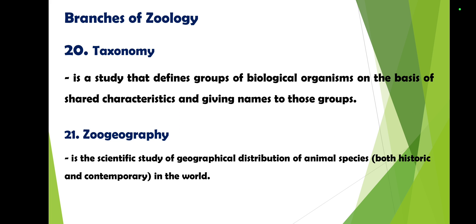Taxonomy is the study that defines groups of biological organisms on the basis of shared characteristics and gives names to those groups. It is basically the classification and organization of species. Taxonomy focuses on the shared characteristics or traits of each species or animal.